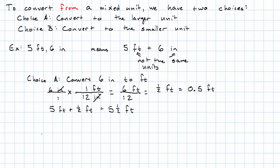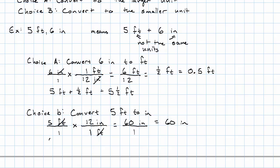Okay. So choice A was to convert everything to feet. Choice B is to convert 5 feet to inches. So we have 5 feet over 1 and we want a conversion factor that will get rid of feet and bring in inches. We know that 1 foot equals 12 inches. Feet cancel out. We have 5 times 12 is 60 inches over 1 or just 60 inches.